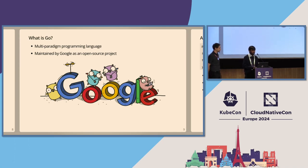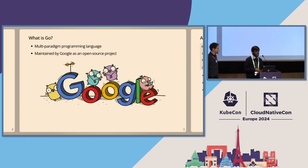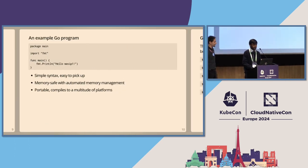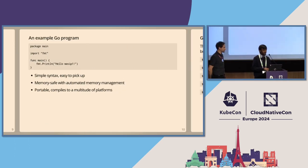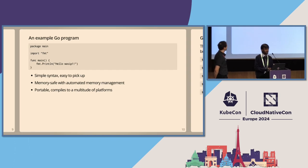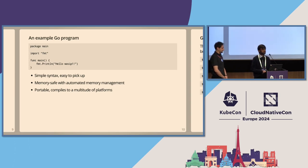Go is a multi-paradigm language primarily oriented towards developing secure and production-quality applications. It is developed and maintained by Google as an open source project. This is a Go program that prints a hello message — as you can see, it is quite simple. Even if you have never looked at a Go program before, you'll be able to make sense of the code. Go is easy to pick up, has a rich standard library, advanced concurrency primitives built into the language like goroutines and channels, and it's also very portable — compiling to a multitude of targets, including WebAssembly.